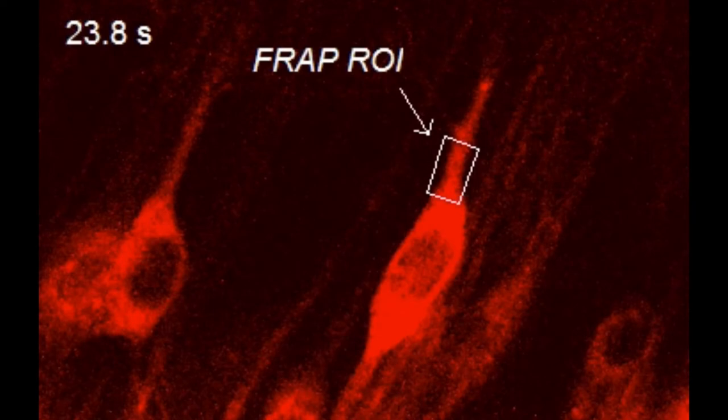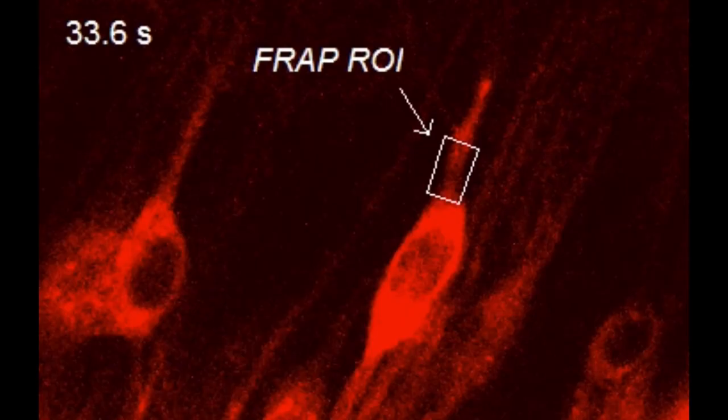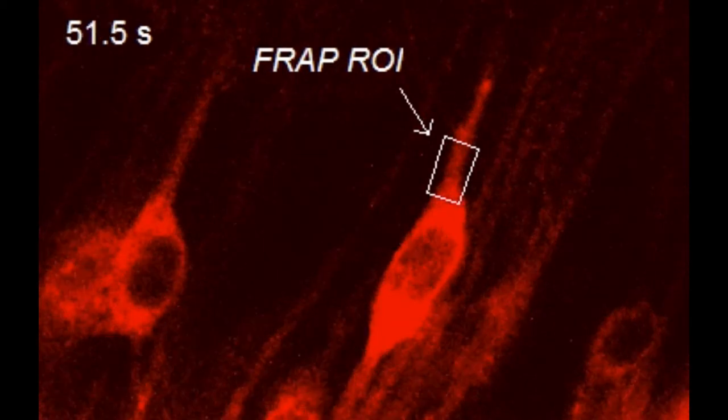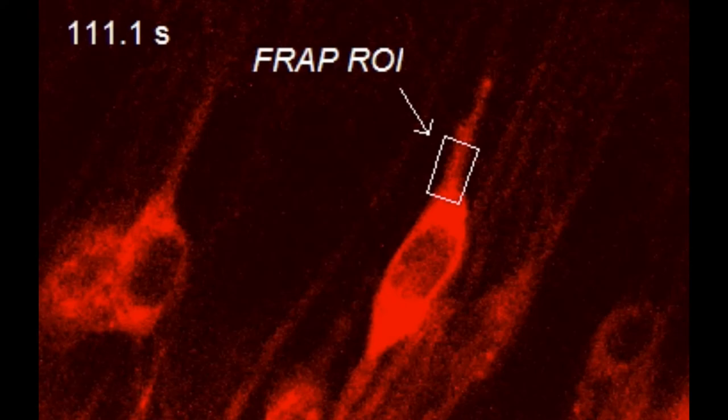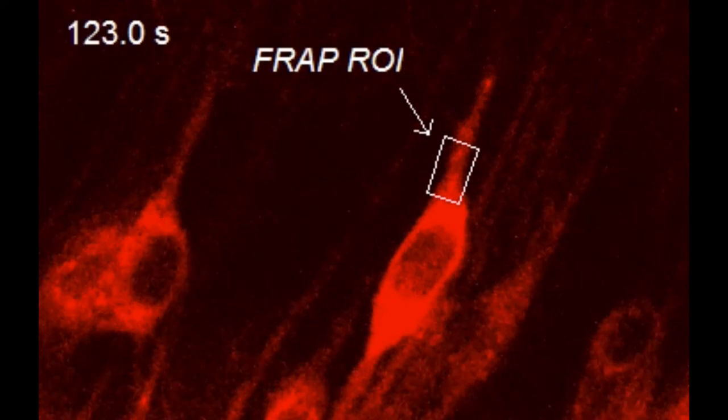So in a FRAP experiment, scientists use a special kind of fluorescence microscope, called a confocal microscope, which lets them expose a tiny region of the cell to high-powered laser light. That bleaches the proteins in that region, but not elsewhere. The proteins are still there, they're just not fluorescent anymore. Then the scientists can use lower-powered light to excite the fluorescent protein and take pictures over time to see what happens to the proteins that were not bleached.